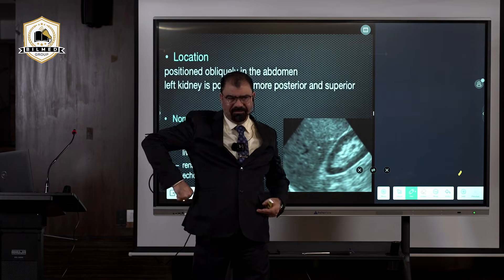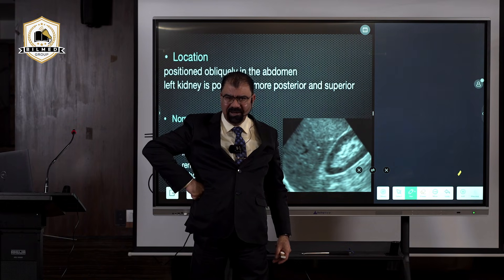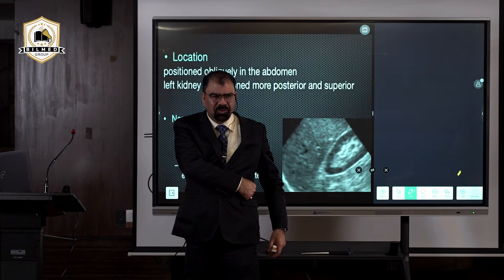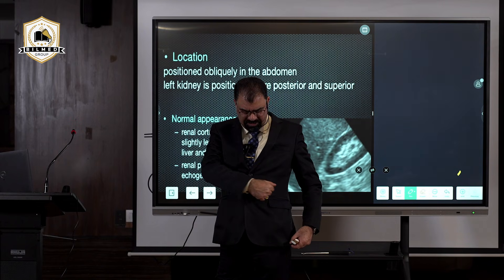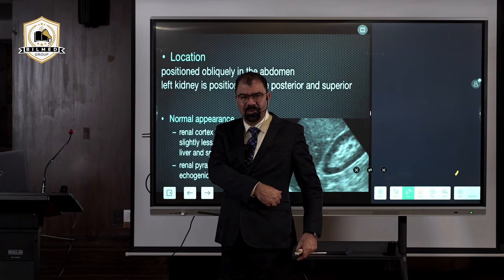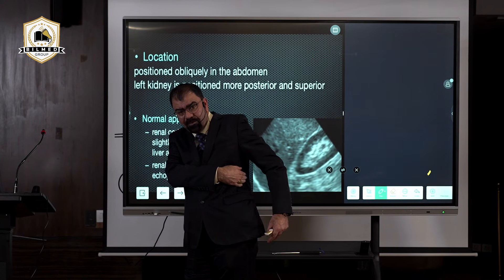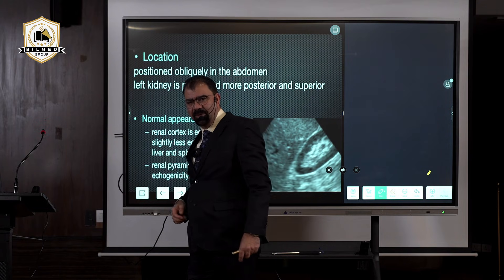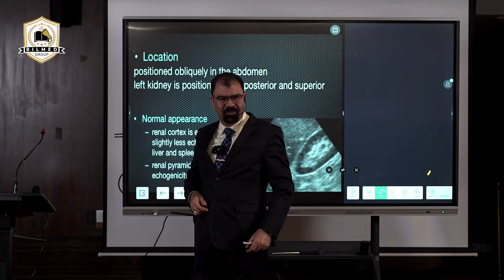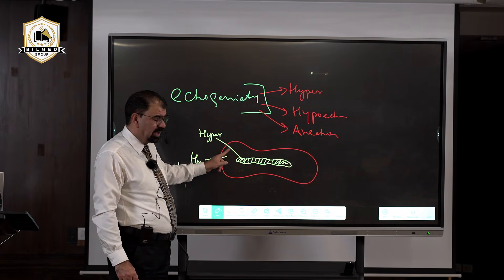When you put the probe over the patient to get the left kidney, you are not keeping the probe at the position where you got the right kidney. You have to move some centimeters up and posterior. The center is hyperechoic as compared to the periphery, which we will discuss in KUB.